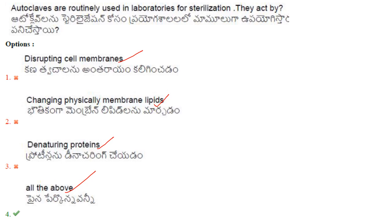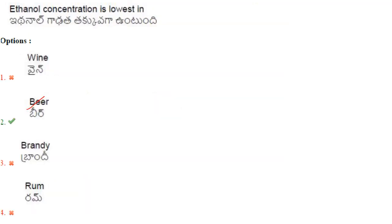Autoclaves are routinely used in the laboratory for sterilization. They act by disrupting cell membranes, changing physical membrane lipids, and denaturing proteins — so they act by all of the above. The answer is option 4. The ethanol concentration is lowest in wine and beer compared to brandy and rum — the answer is option 2: beer.